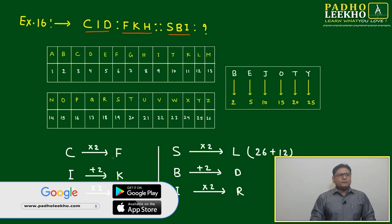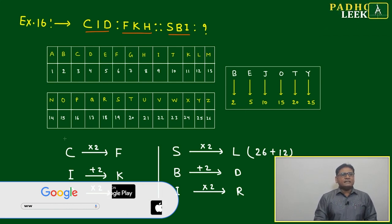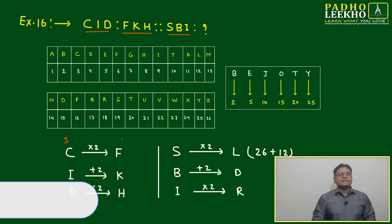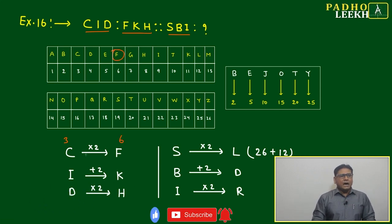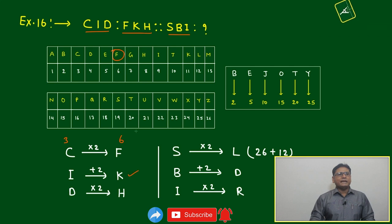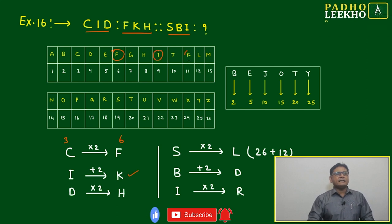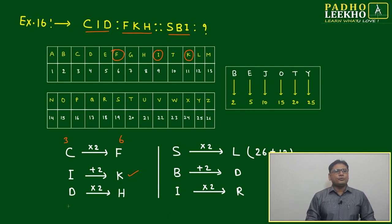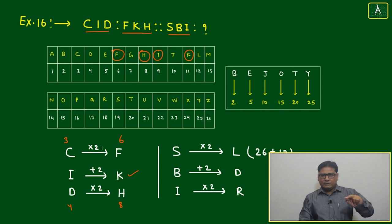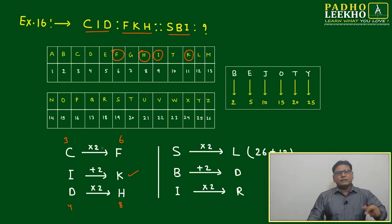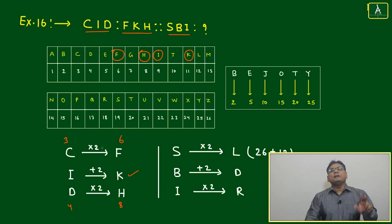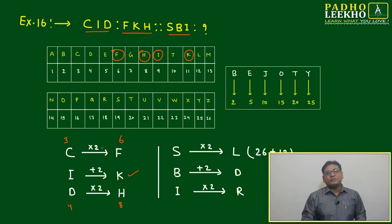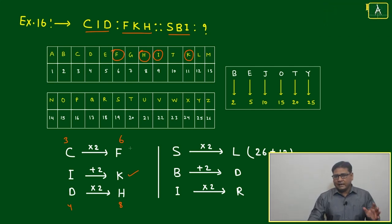Here, C to F is multiplication by 2, because C is 3 multiplied by 2, which becomes 6. F is 6. I plus 2 will be K, because I is 9, K is 11. D is 4; if you multiply by 2, it will become H, which is 8. This means multiply by 2, addition by 2, multiply by 2—alternate multiplication and addition by 2. This is the pattern, the analogical relation.